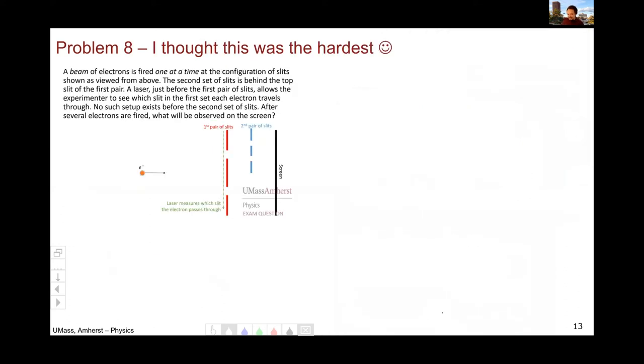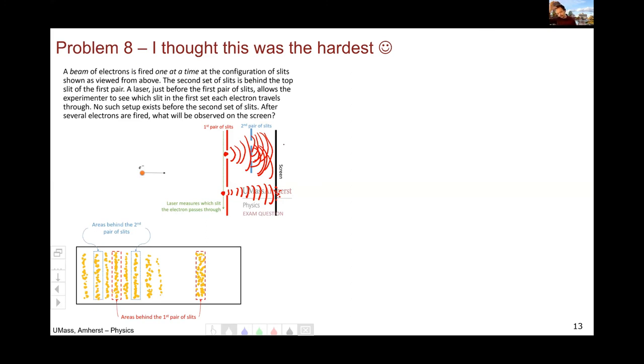I thought problem eight was probably the hardest. Personally, this is the double slit problem. So electron fired at my slits. And there is a laser, which sees which slit the electron goes through. If the electron is seen to go through this slit, it'll begin to populate dots as a shadow behind that slit. However, if the electron is seen to go through this slit, it will turn into a wave, which will then go through both slits, forming the characteristic light, dark, light, dark, light, dark pattern behind those upper slits.